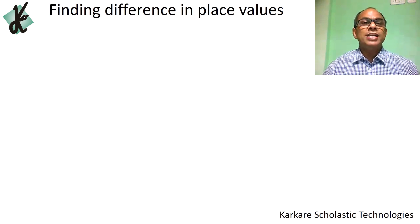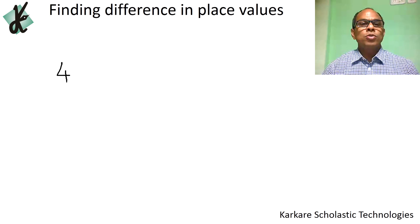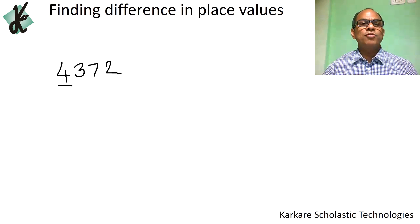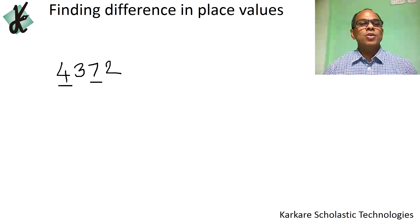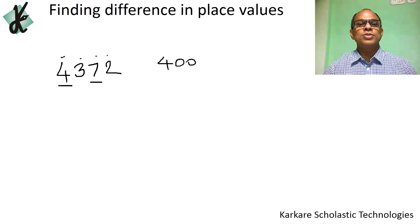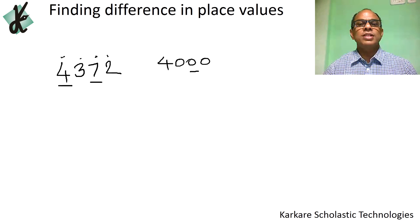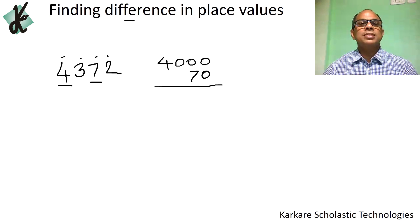Finding the difference in place values. Take the number 4372. What is the difference between the place value of 4 and 7? This is simple subtraction. The place values are units, tens, hundreds, and thousands. So the place value of 4 is 4000, and the place value of 7 is 70.